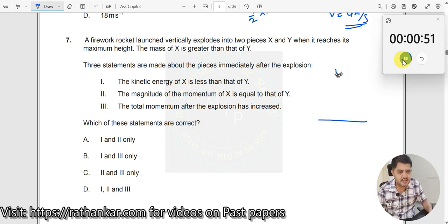You launch the rocket, it goes up and blasts into two parts. This is X, this is Y over here. The mass of X is higher than that of Y.